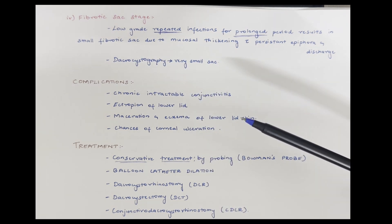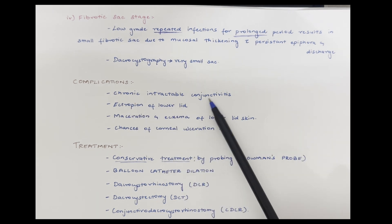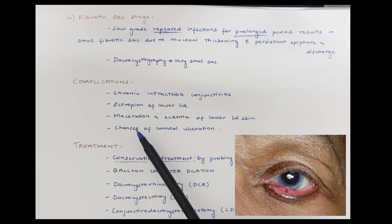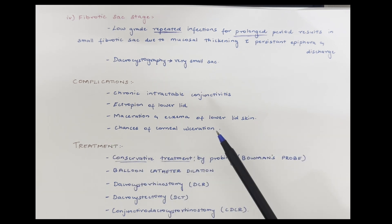Complications of chronic dacryocystitis: chronic intractable conjunctivitis, ectropion of lower lid, maceration and eczema of lower lid, chances of corneal ulceration are increased.